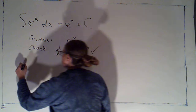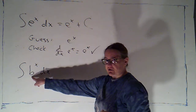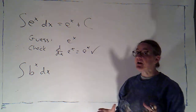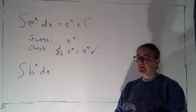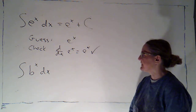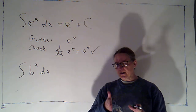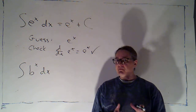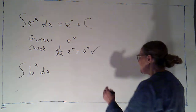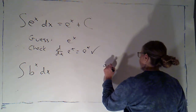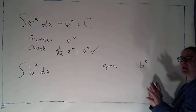What if I'm integrating b to the x, where b is an exponential base — a positive number that's not 1? For exponential functions, the base either has to be between 0 and 1 or bigger than 1. With exponential functions, when I take the derivative, I get the exponential function back. But if the base isn't e, I get more than that — there's an extra factor. So I'll go ahead with my guess and check method. I'm going to guess b to the x, and I think this is going to be off but close.